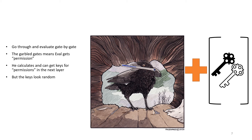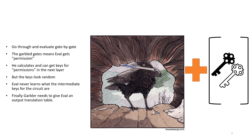However, the keys look random. Even though these keys semantically represent 0 and 1, syntactically they don't reveal anything about which value they mean. That means the evaluator never learns what the intermediate keys for the circuit are. Only at the end does the garbler give the evaluator an output translation table — this is the decode function — where given the garbled output, it will turn it into the correct output for f of x. And because everything looks random throughout, that's why garbled circuits are a way to do secure two-party computation.